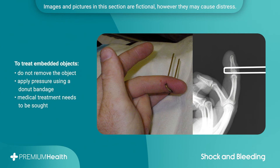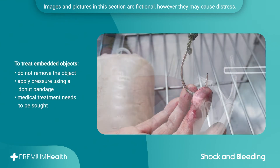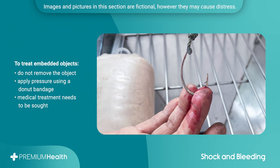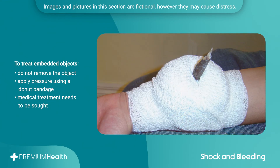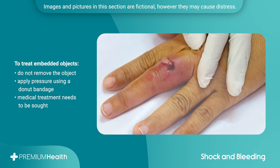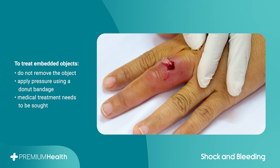When a foreign object such as a knife, glass, branch or stick is embedded in a wound, do not remove the object as it may be acting as a plug. Apply pressure around the object using a doughnut bandage. Penetrating, embedded or puncture wounds and any bites have a substantial risk of becoming infected, and medical treatment needs to be sought.